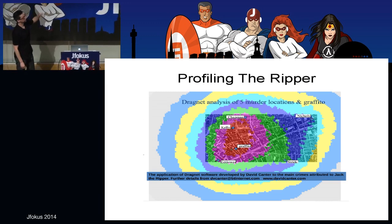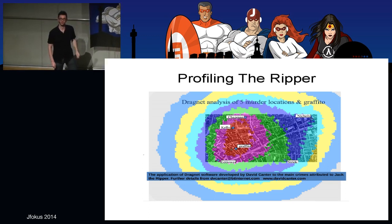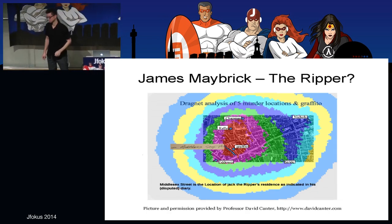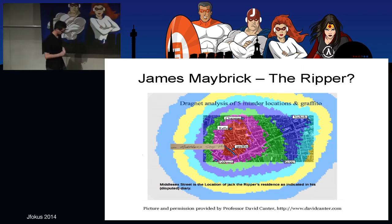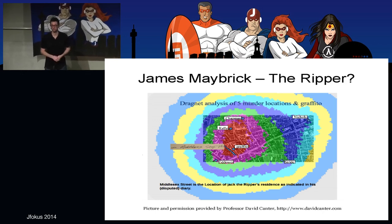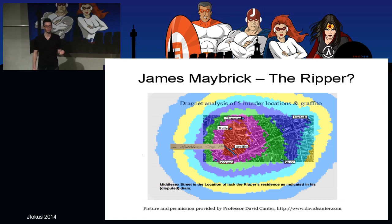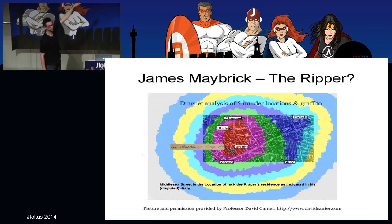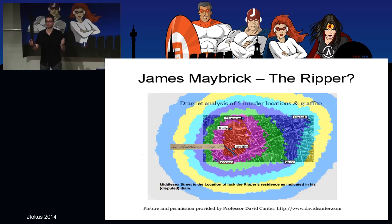Jack the Ripper was never caught. Do these techniques really work? Please meet James Maybrick — a Liverpool cotton merchant and a historic person. Twenty years ago, an interesting document surfaced: a diary written by James Maybrick in which he claims to be the Ripper. The most interesting thing is that Maybrick writes that as he went to London to do business, he rented a room on Middlesex Street — right in the middle of our predicted hotspot. I'm not certain Maybrick was Jack the Ripper, but if you ever have to bet money on it, James Maybrick is my best advice.